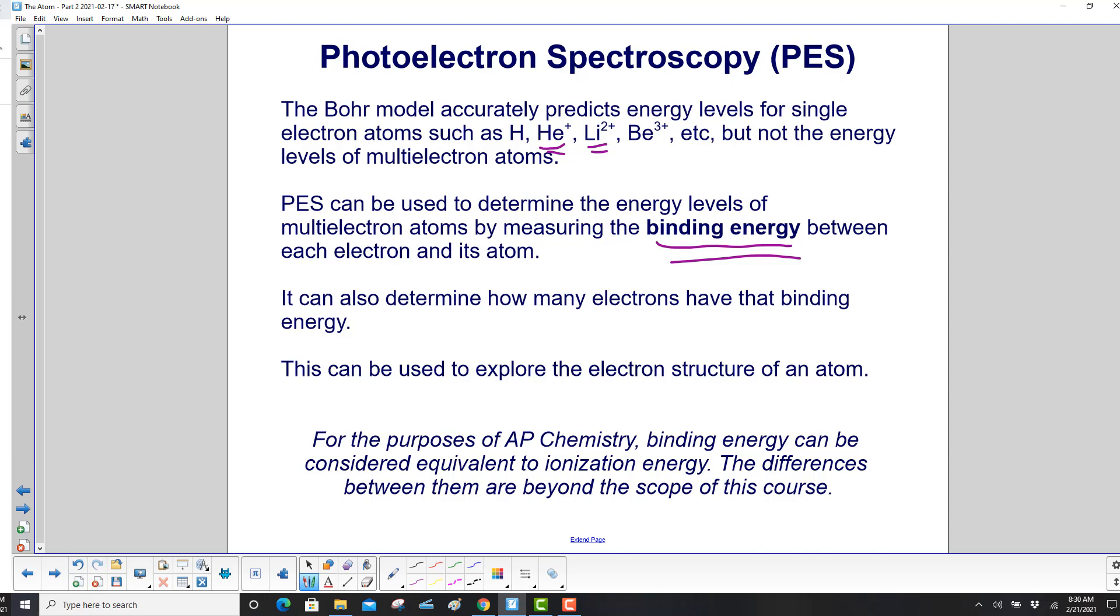For the purposes of AP chemistry, binding energy can be considered equivalent to ionization energy. The differences between them are beyond the scope of this course.